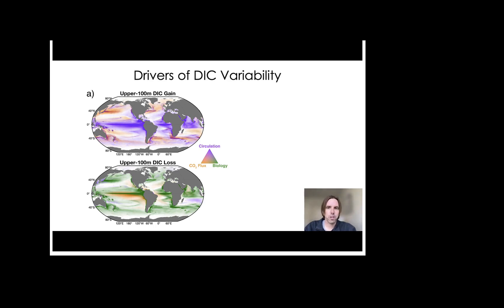Okay, so next we're going to focus on the time mean patterns of the DIC budget terms. So this slide shows the blended patterns of DIC gain, which are in the top panel, and DIC loss, which are in the bottom panel, from circulation, which is shown as purple colors, and circulation consists of the sum of net advection and net diffusion. We are also showing air-sea CO2 flux, which is orange colors, and net biology, which is green colors. And the color saturation shows the relative magnitude of each term. And each color has a transparency to it, so you can see the blended and stacked contributions in each model grid cell.